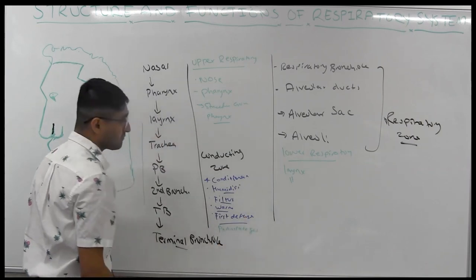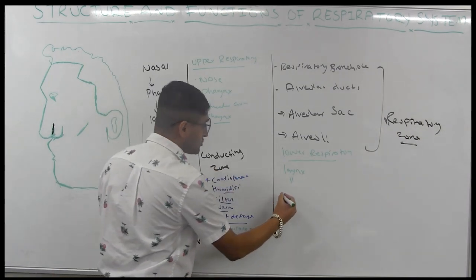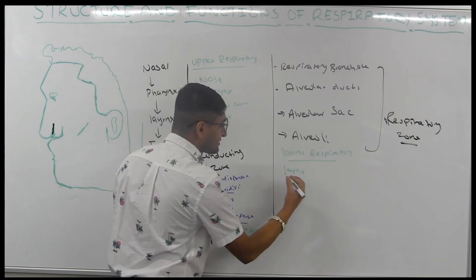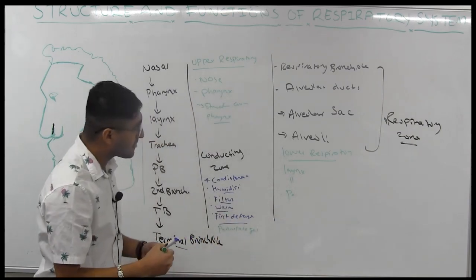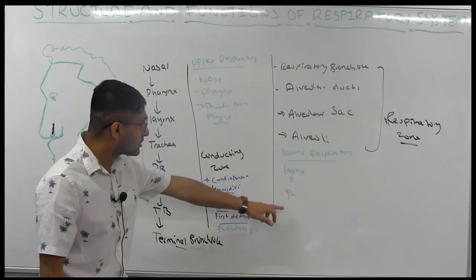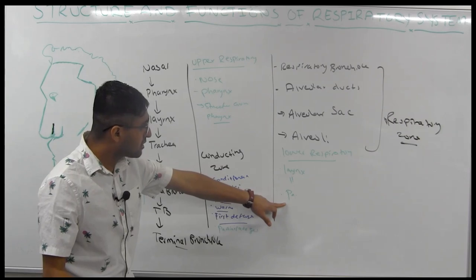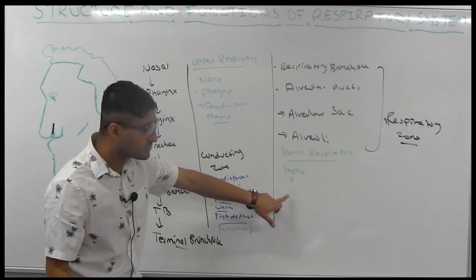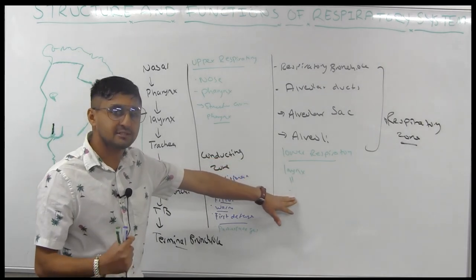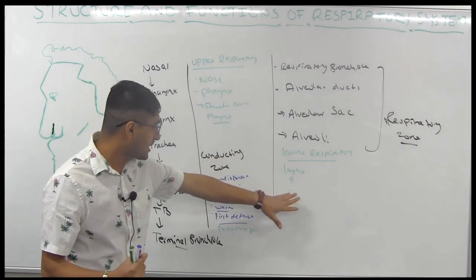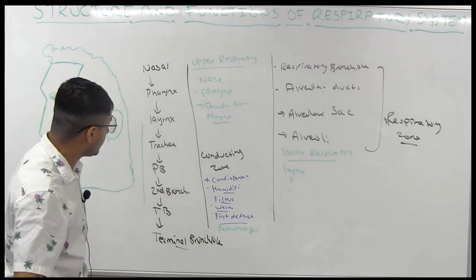The function of the respiratory zone is that it actually participates in gas exchange — that is its main function. It also contains macrophages and some cells that produce mucus, but the primary role of the respiratory zone is to participate in gas exchange.